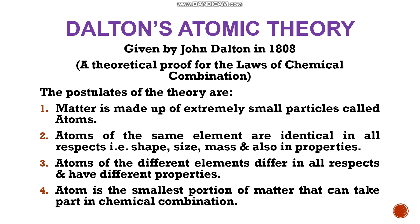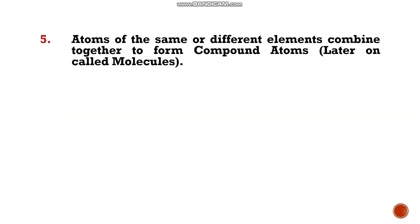At that time there was no other particle discovered that was smaller than the atom, so the atom was considered the smallest particle of matter. In other words, according to Dalton, the atom was indivisible because it was the smallest possible portion of matter. The next postulate is that atoms of the same or different elements combine together to form compound atoms, and these compound atoms were later called molecules.